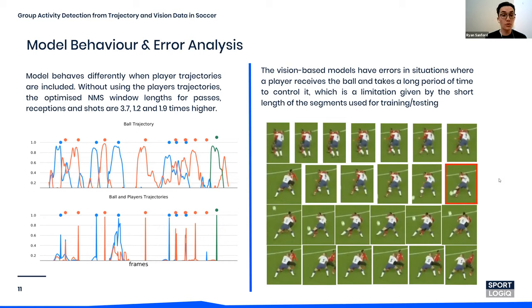We also explored errors associated with our models. A notable error is a situation where a player receives a pass but does not control it immediately. We hypothesize that this error can be alleviated by using longer input sequences for both training and testing.